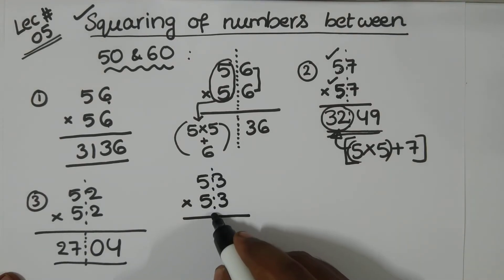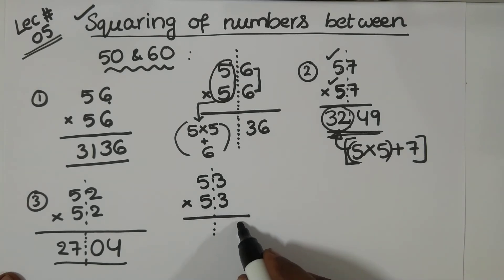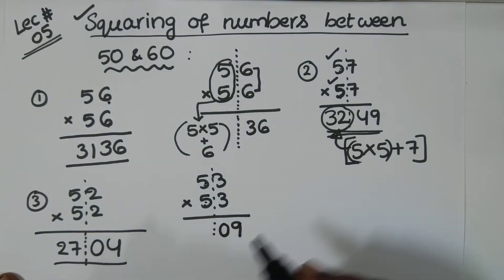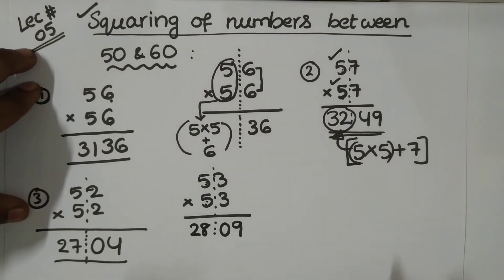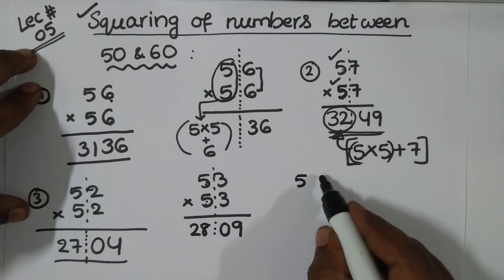Now, what do you have here? 3, 3 is 9. But I require a couple of digits. So, I take 0, 9. Now, 5, 5 is 25 plus 3. Okay? 25 plus 3 is 28. Okay? So, you can make it this way.